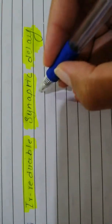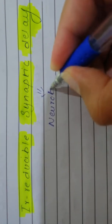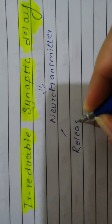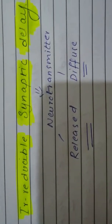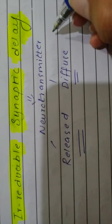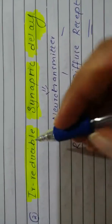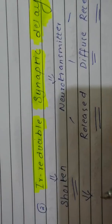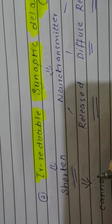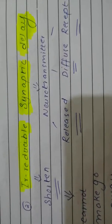This synaptic delay is the time it takes for the neurotransmitter to be released, to diffuse to the post-synaptic membrane, and finally to bind with the receptor. All these events account for the irreducible synaptic delay. 'Irreducible' means something you cannot shorten or make go away. The value of this irreducible synaptic delay does vary in different parts of the body.